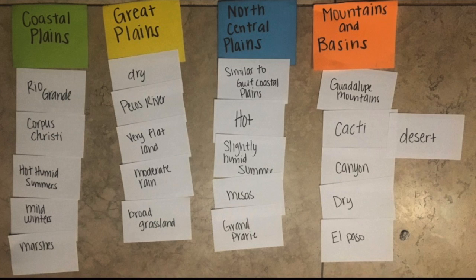Starting with the lesson, have students brainstorm all of the words that they can relate to the topic. Do not critique the students' responses, as this is just a thinking process. Discuss which words go under which subcategories. This can be done as a whole class, small group, or even individually with the teacher's help.